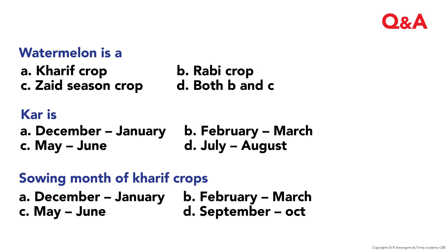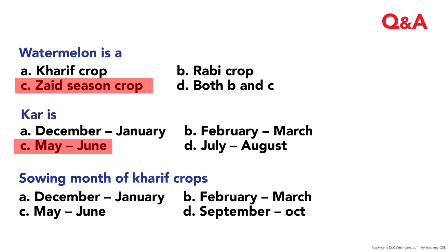Question and answer: What is the season for watermelon crop? The correct answer is Zaid season. The sowing month is May–June. Crops that are normally taken in May–June fall in the Zaid season — that is the correct answer.